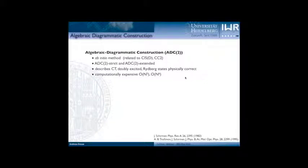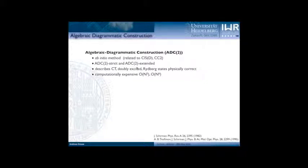If you are not too familiar with it, the Algebraic Diagrammatic Construction scheme is an ab initio method — no density functional theory. It's very closely related to CIS(D) and to CC2 as well. It's a second-order method that exists in two variants: a strict variant obtained by a rigorous derivation, and an extended variant which is an ad hoc extension via some additional terms, leading to an improved description of doubly excited states but also a slightly unbalanced description of the total spectrum. Since it's ab initio, you have the physically correct description of charge transfer states, doubly excited states, and you can also treat Rydberg states if your basis set is sufficiently large and diffuse.